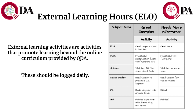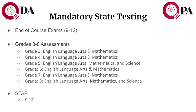Mandatory state testing. End of Course Exams, grades 9-12: English 2, must earn a score of 684 or higher; Algebra 1, must earn a score of 684 or higher; Geometry; Biology; American History; American Government.